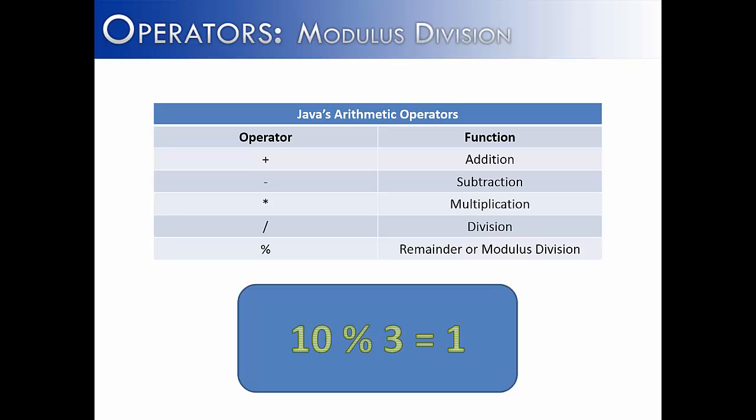Modulus or remainder division is used to find the remainder of usually integer division. So if we did 10 mod 3, you might say that's a percent symbol. The percent symbol does not have anything to do with percentages when it's used as an operator like this. It's used rather to find the remainder. And again, when we have 10 mod 3, it would give us 1, because 3 goes into 10 three times with a remainder of 1.